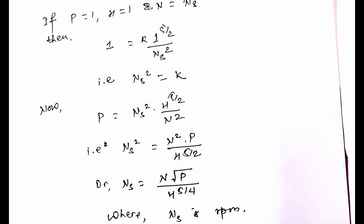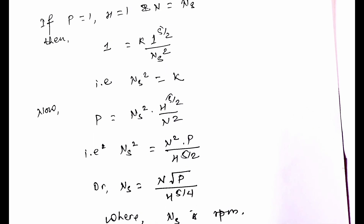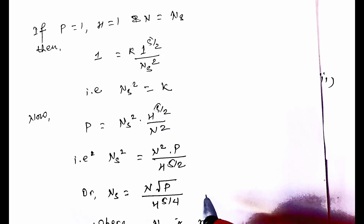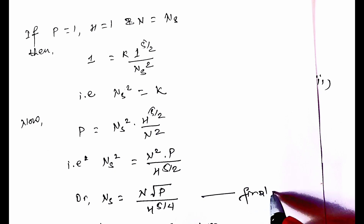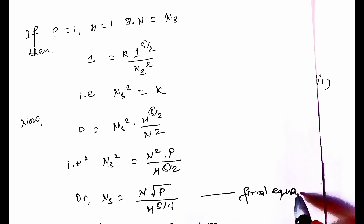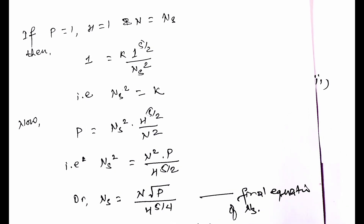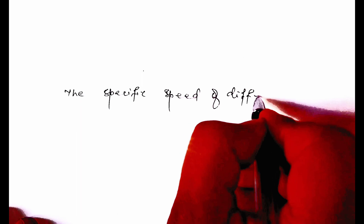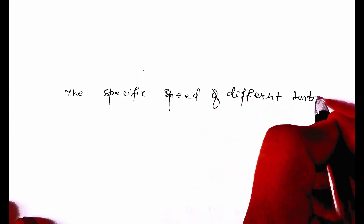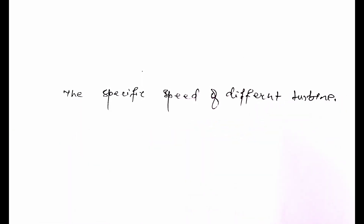Here P is in horsepower and H is in meters. This is the final equation for specific speed Ns, and it can be shown as derived above.